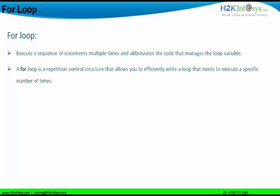The for loop is a repetition control structure — a control structure by which you can control the loops. It allows us to efficiently write a loop that needs to be executed a specific number of times. A for loop will be used under circumstances where we know the number of times the looping should happen. If we are sure about that, we use a for loop; otherwise we use a while loop.